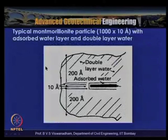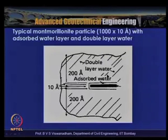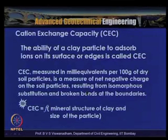A typical montmorillonite particle (1,000 × 10 Å) has a double layer water thickness of about 200 Å, with an adsorbed water layer of about 10 Å surrounding the clay particle that possesses very high viscosity.